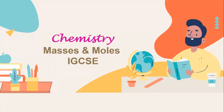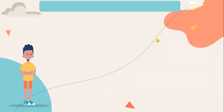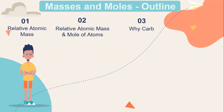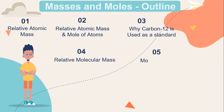Hello everyone, welcome back to JOM StudyLa YouTube channel. Let's continue with our lesson for IGCSE chemistry, chapter 5, masses and moles. Our study outline for masses and moles comprises of relative atomic mass, relative atomic mass and mole of atom, why carbon-12 is used as a standard, relative molecular mass, mole and mass, and finally mole and gas volume.